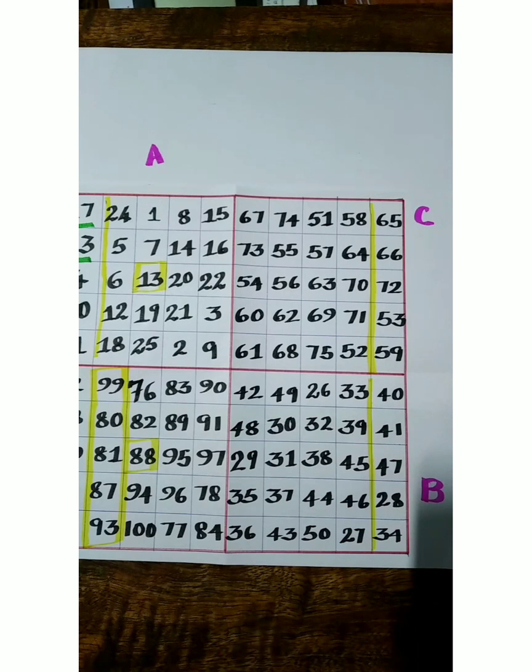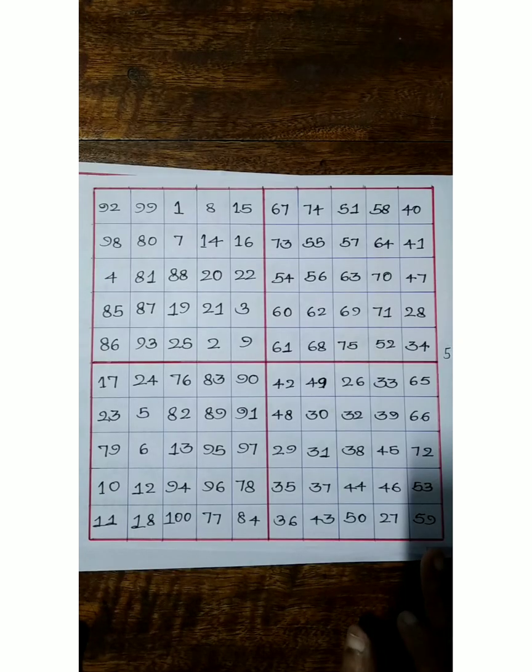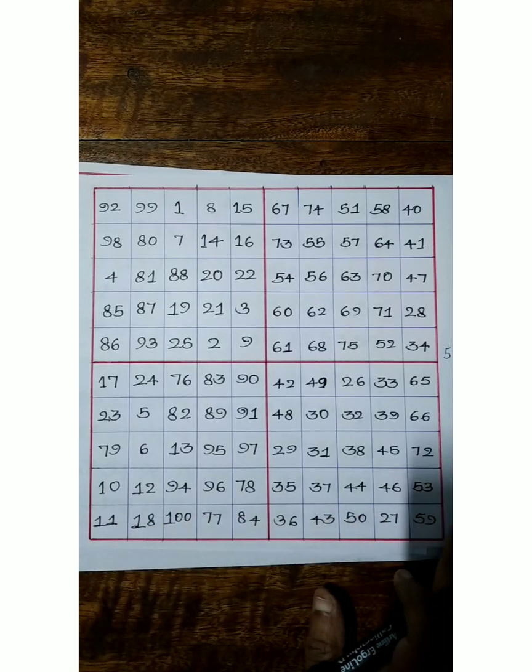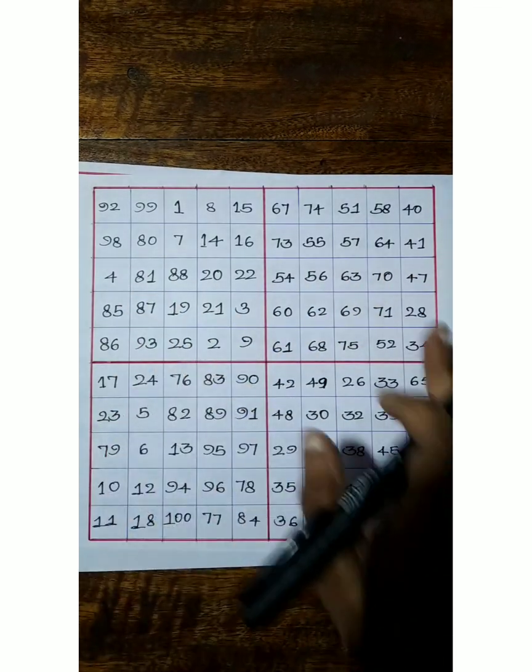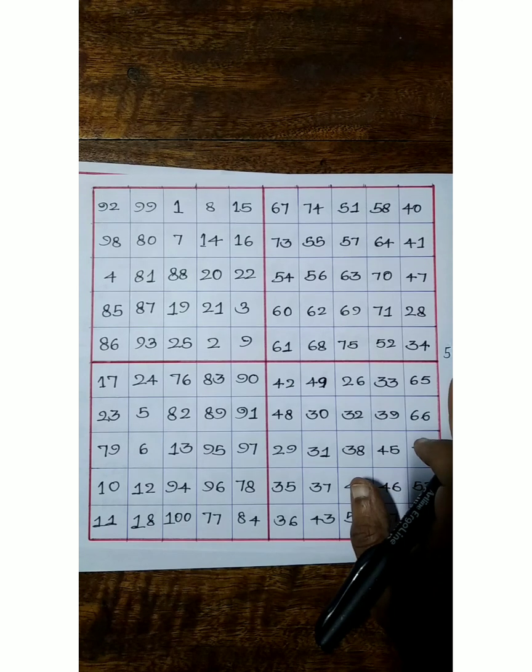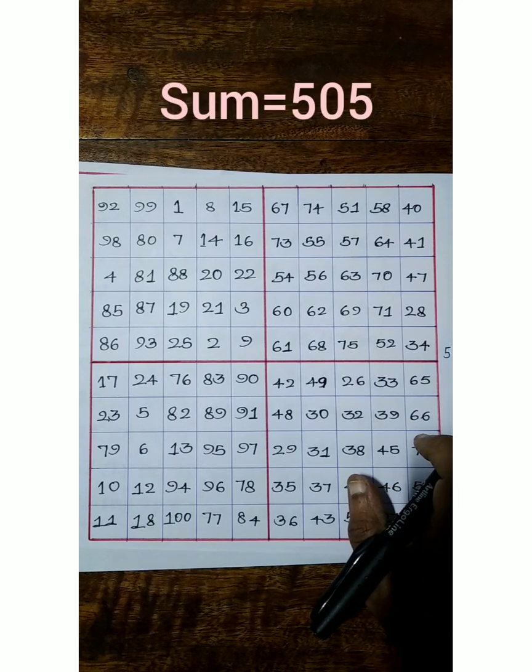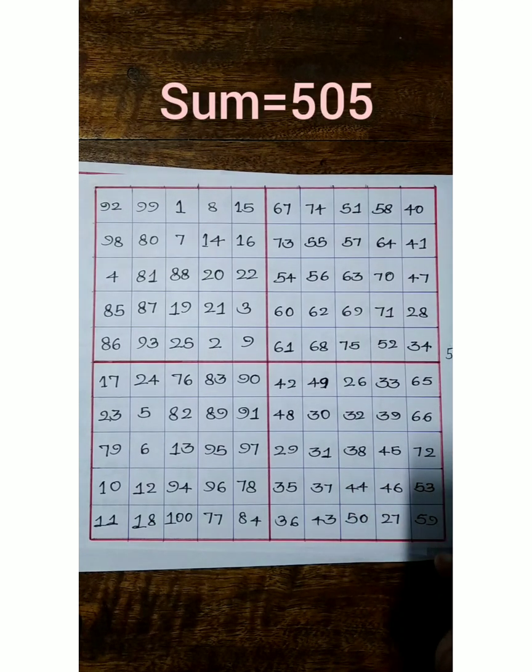Finally, we will get magic square 10 cross 10. Add row wise, column wise, or diagonal wise, we will get sum is equal to 505. Always we have to use consecutive numbers.